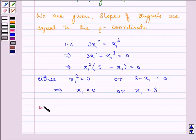Now when x₁ = 0, the value of y₁ = 0. And when x₁ = 3, the value of y₁ = 3³ = 27.